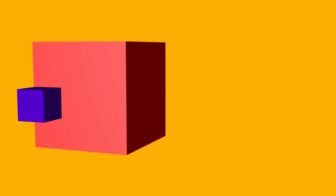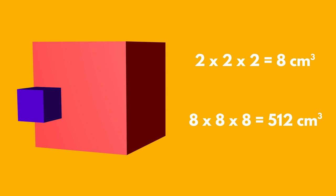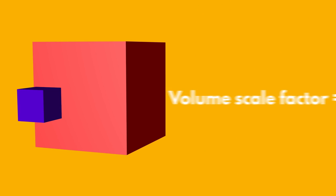The volume of the smaller cube is 8 cm³. The volume of the larger cube is 512 cm³. The volume scale factor of these two similar shapes is 64. This is the length scale factor cubed.